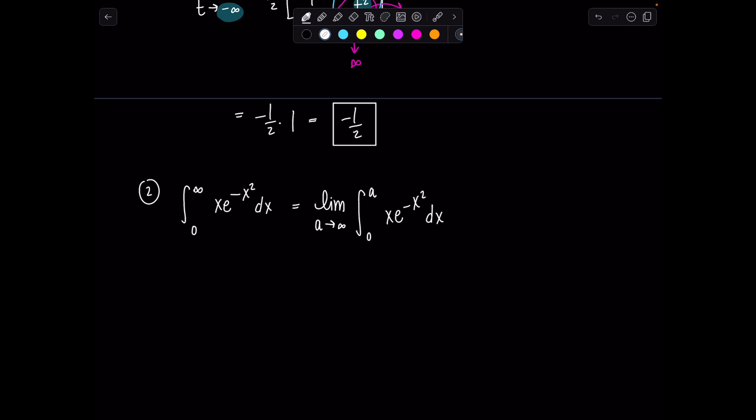Very nice. And then, same u sub applies from before. So, if you just want to copy everything down, u was x squared. du was 2x dx. Do you remember? And then, one-half du was x dx. And here's x dx. Just don't forget, we have to also change our limits of integration. So, this is limit A goes to infinity integral zero to, yes, A squared, one-half e to the negative u du.